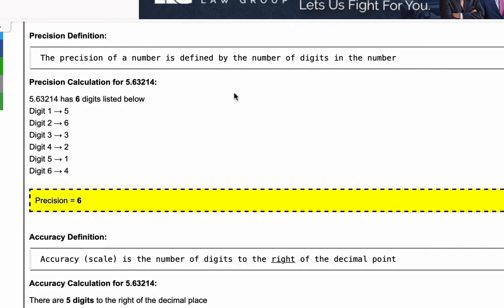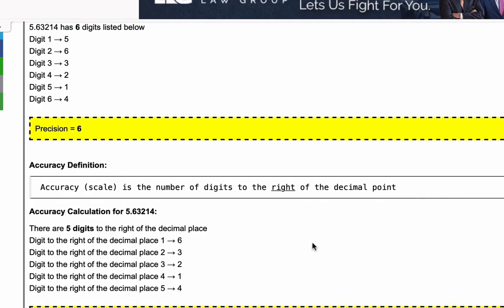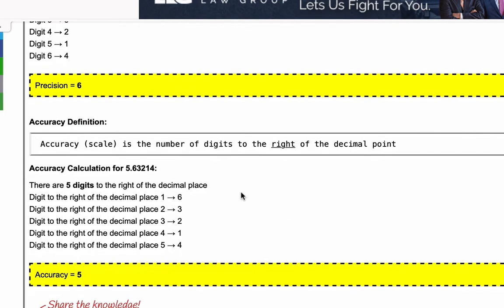Next we'll walk through the accuracy of the number. The accuracy or scale is the number of digits to the right of the decimal point. In this case the accuracy calculation for 5.63214 is laid out here and the final answer is here. Because there are five decimal places to the right of the decimal point the accuracy is five.